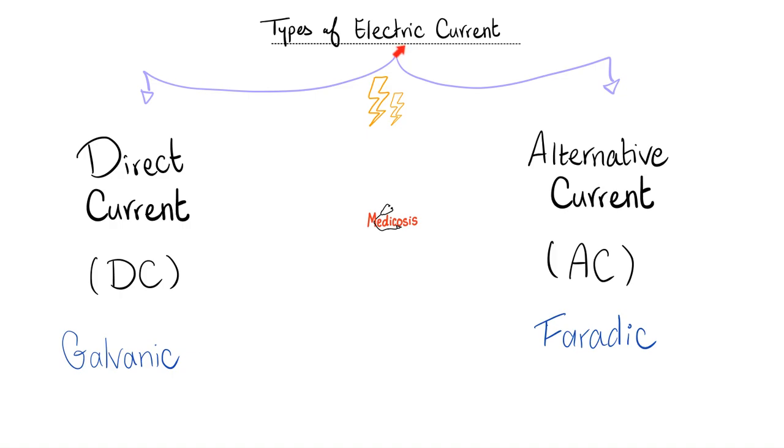The electric current is divided into DC and AC. DC is also known as galvanic—thank you, Luigi Galvani. The alternative is called faradic—thank you, Michael Faraday. Galvani came before Faraday.